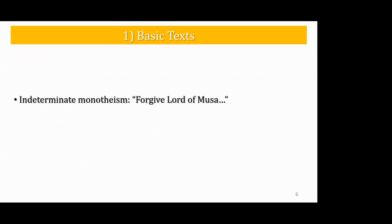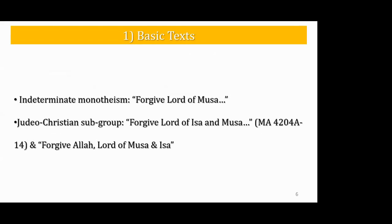Examples of indeterminate monotheism: 'Forgive, Lord of Musa' — Moses. A Judeo-Christian subgroup would have something like 'Forgive, Lord of Isa and Musa,' or 'Forgive Allah, Lord of Musa and Isa.' Notice that the word for Jesus used in these inscriptions could be an explanation for its use later in the Quran. They're not using the Christian version of the name of Jesus, which is notable — it reflects a Judeo-Christian group rather than a purely Christian group.